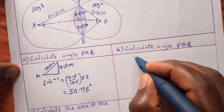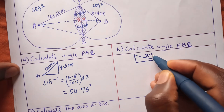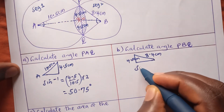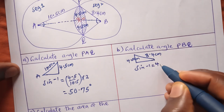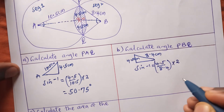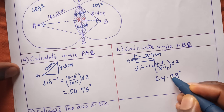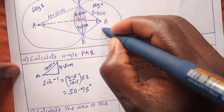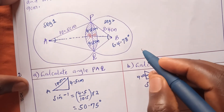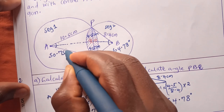Now for angle B, we extract the right angle triangle on the other side. The hypotenuse is 8.4 centimeters and the opposite is 4.5 centimeters. We get the sine inverse of 4.5 divided by 8.4 and multiply by 2, giving us angle B = 64.78 degrees. Angle A is 50.75 degrees.